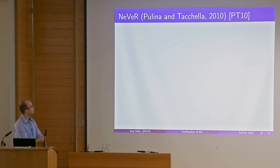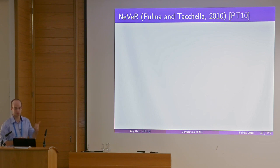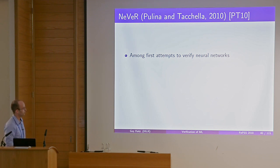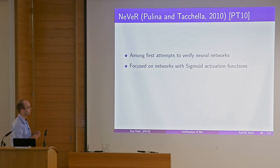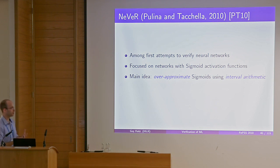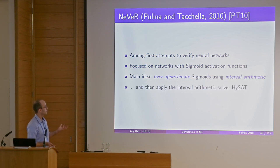One of the first papers was about a tool called Never by Pulina and Tacchella, appearing at CAV 2010 — one of the very first attempts to verify neural networks. They focused on networks with sigmoid activations, not piecewise linear ones. Their main idea was to do an over-approximation of the sigmoids to simplify them, then apply interval arithmetic. They could only tackle very small networks — about 10 neurons — which was too small for much practical use, but it was an interesting first step.